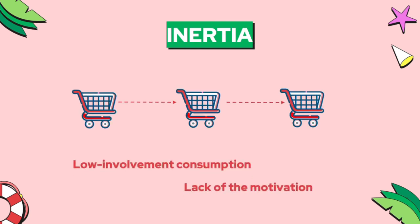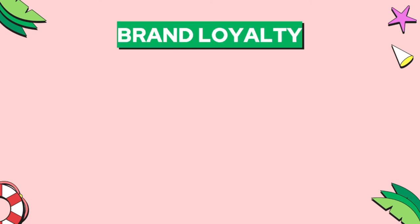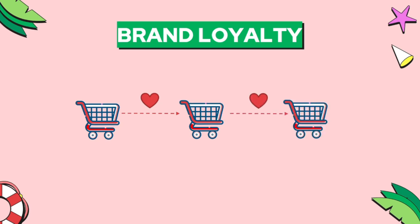Inertia is when consumers continually buy the same brand without having any real loyalty to it. Brand loyalty, on the other hand, is repeat purchasing behavior not only on a regular basis but also with a strong positive attitude. Cult products can mean consumer loyalty, devotion, and even worship. Consumers may be willing to pay more for a brand they feel a personal connection to, like Apple, Ferrari, or Ducati.